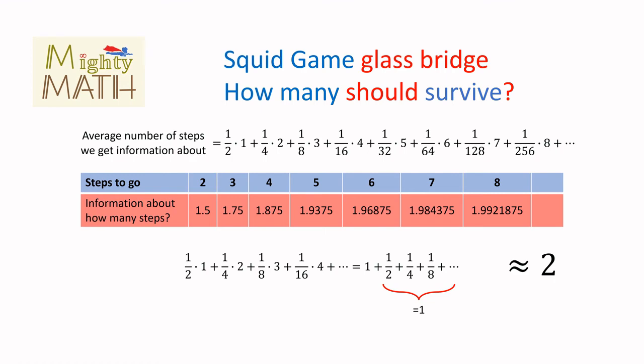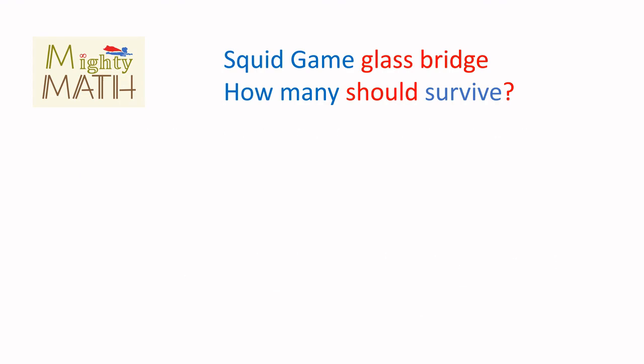Now we have everything we need to answer our question. If every player gives in average information about two steps, we would need about nine misfortunate players to go first and present their fellow players with the heroic legacy of information about all 18 steps. Thus enabling about seven players to cross the bridge safely.